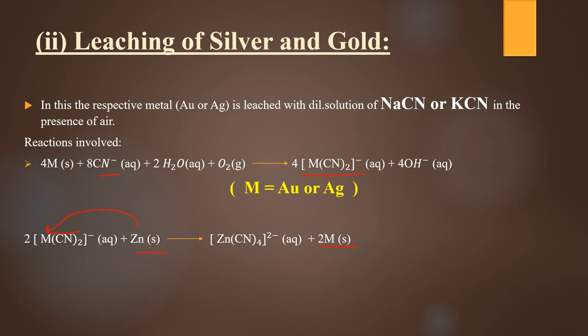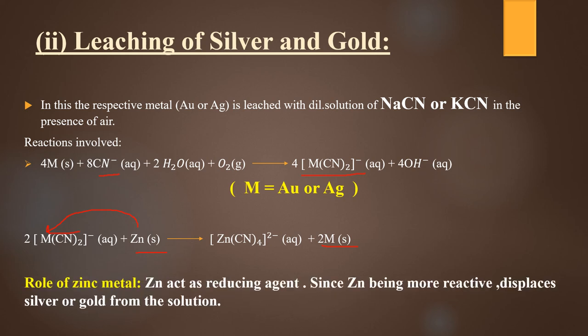The zinc metal here acts as a reducing agent — since zinc is more reactive, it displaces silver or gold from the solution, giving us the pure, concentrated form of gold or silver with no impurities. This concludes the leaching process and all the processes of concentration of ore.